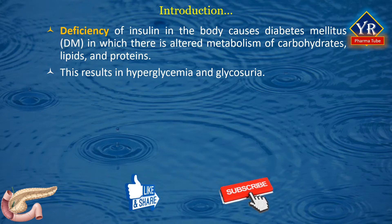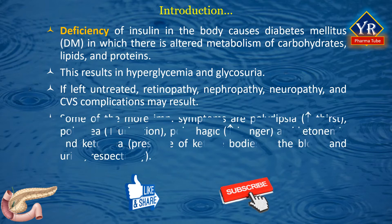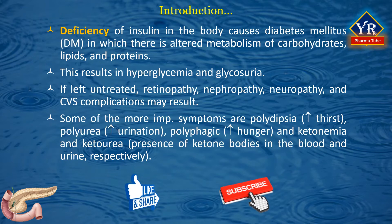If this metabolic disorder is left untreated, retinopathy, nephropathy, neuropathy, and cardiovascular complications may result. Some of the more important symptoms associated with the disease are polydipsia, polyuria, polyphagia, ketonemia, and ketonuria. Administration of insulin and insulin preparations or other glucose-lowering agents can reduce morbidity and mortality associated with the disease.